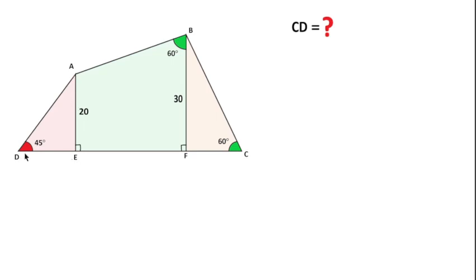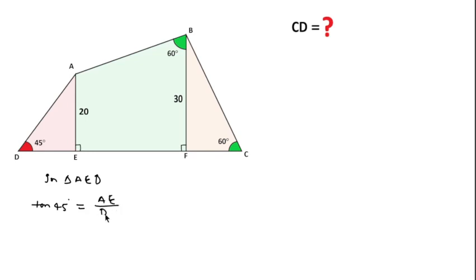Since AED is a right angle triangle, in triangle AED we can write using trigonometry: tan45° equals perpendicular over base, so perpendicular is AE and base is DE. tan45° is actually 1 and AE length is 20, so we can write DE equal to 20 units.